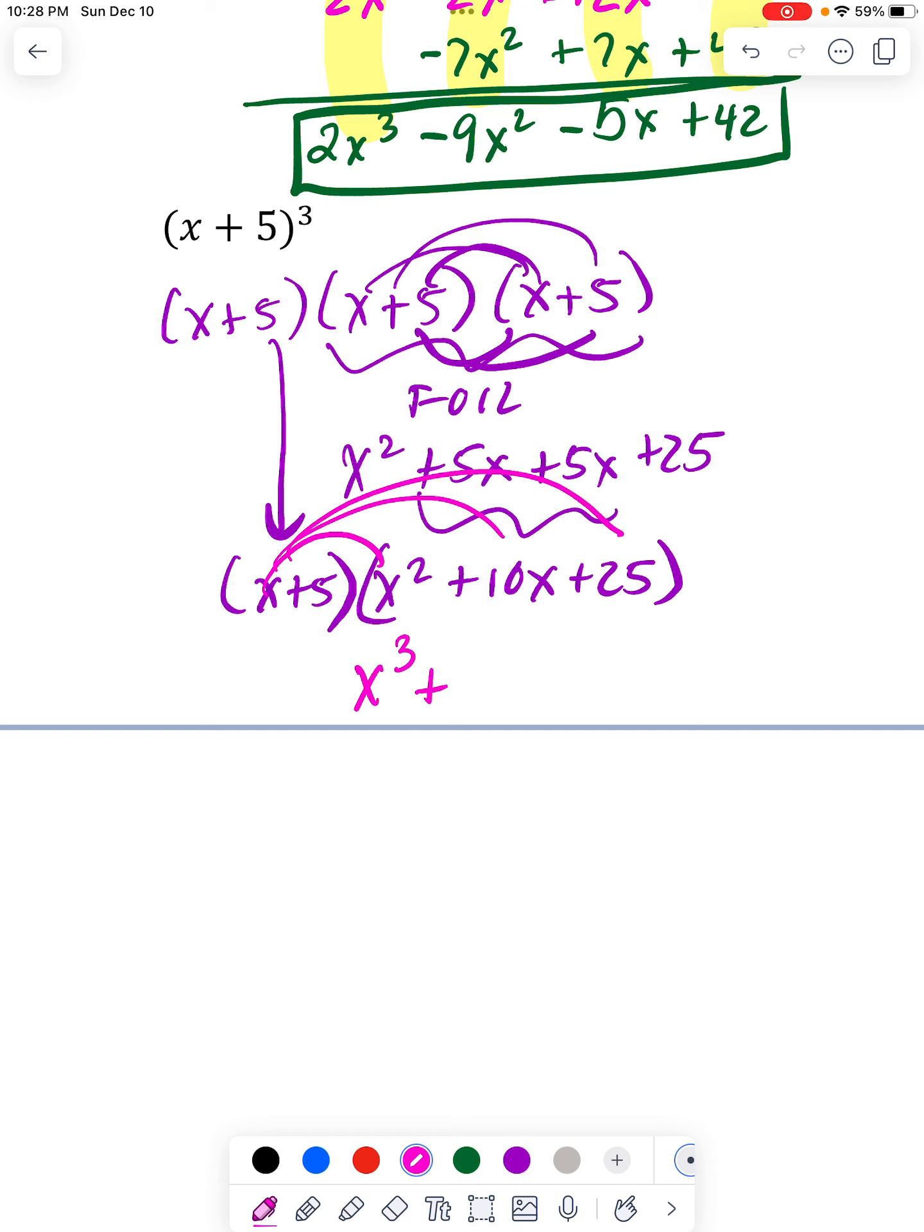x³, 10x times x, x², 25 times x becomes 25x. Then 5 times each part. 5 times x² goes here. 5 times 10x in the middle goes here. And then 5 times 25 goes at the end.